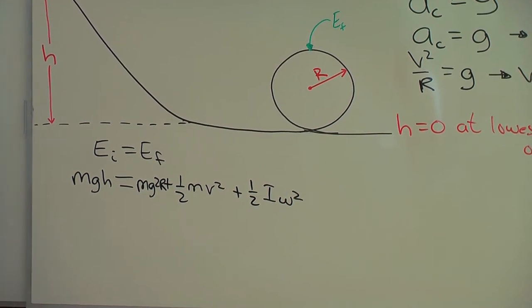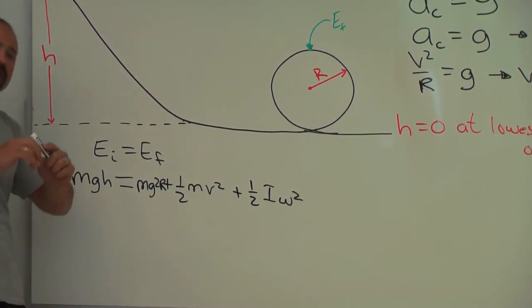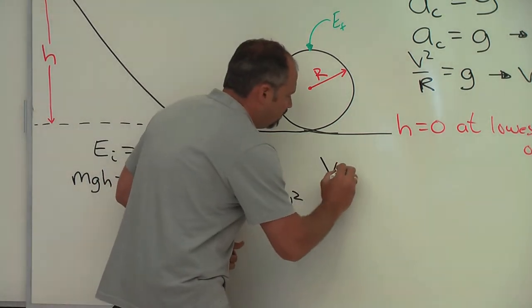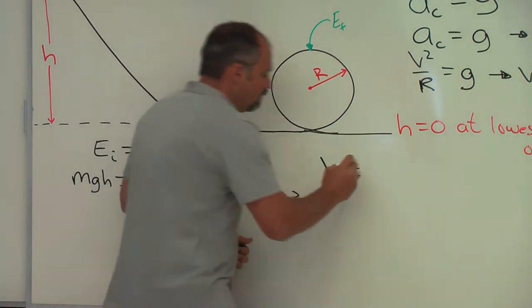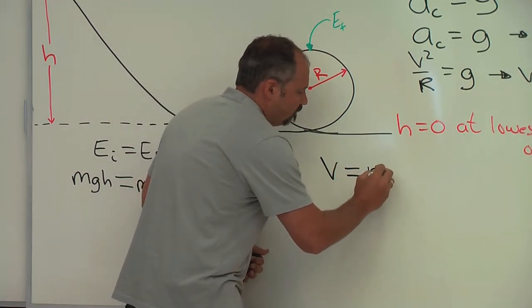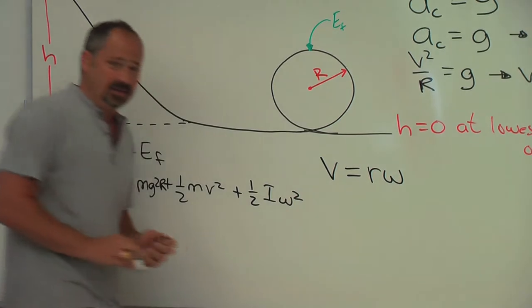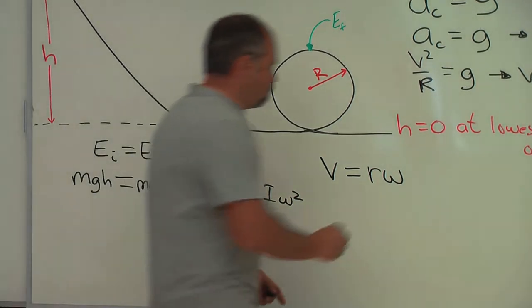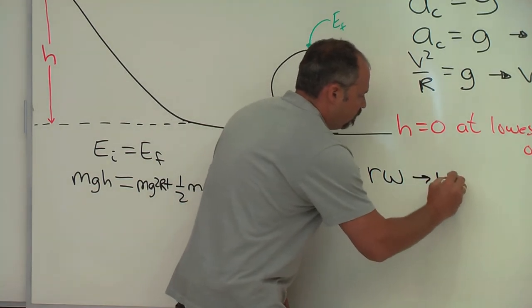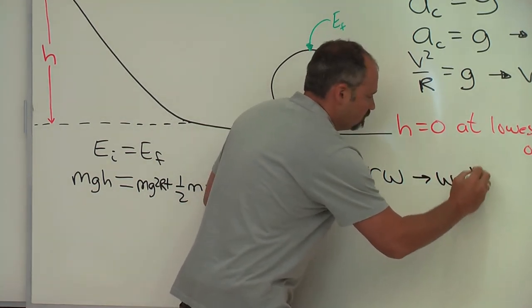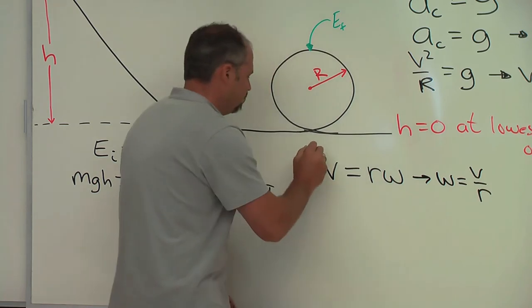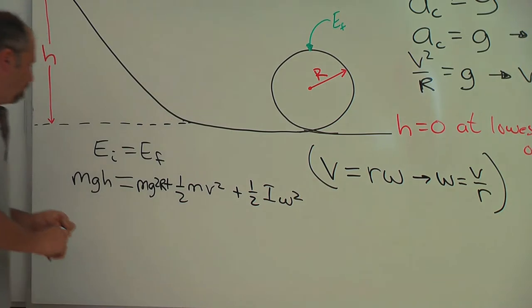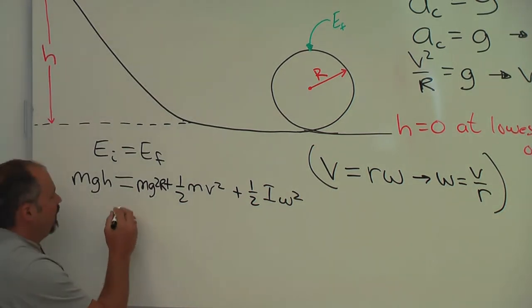Now, first of all, we're going to assume the ball is rolling without slipping. If something is rolling without slipping, then we know that its linear speed will equal the radius of the ball multiplied by its angular velocity. So, rearranging this equation, I can solve for the angular speed, which is just v over r.